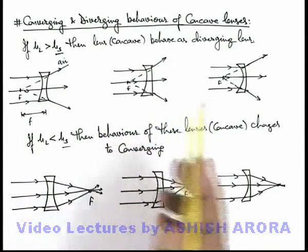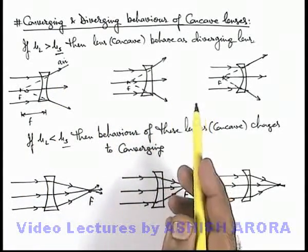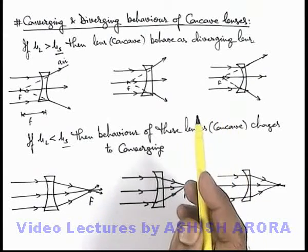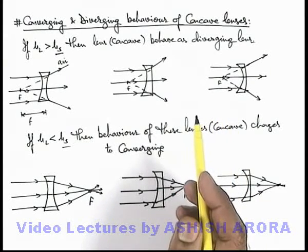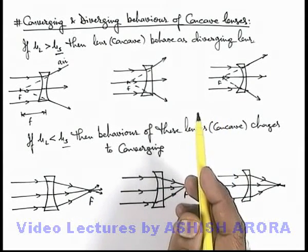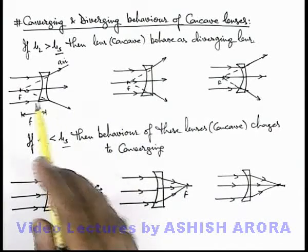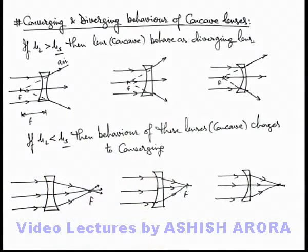So in general, when a lens is placed in air, if it is a convex lens it is taken as a converging lens, and if it is a concave lens it is taken as a diverging lens.